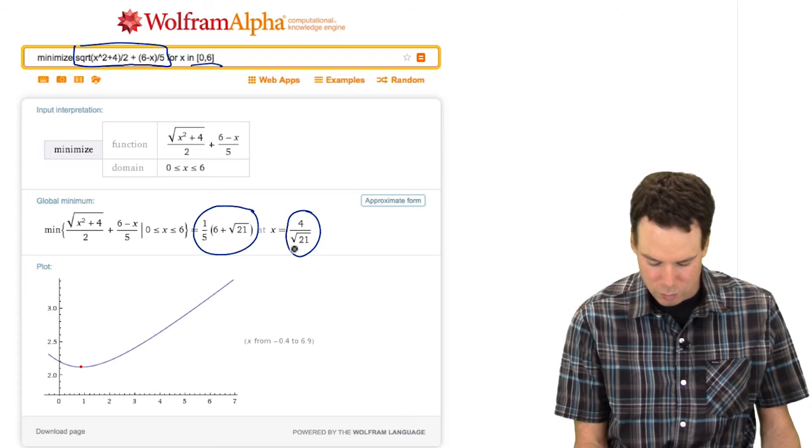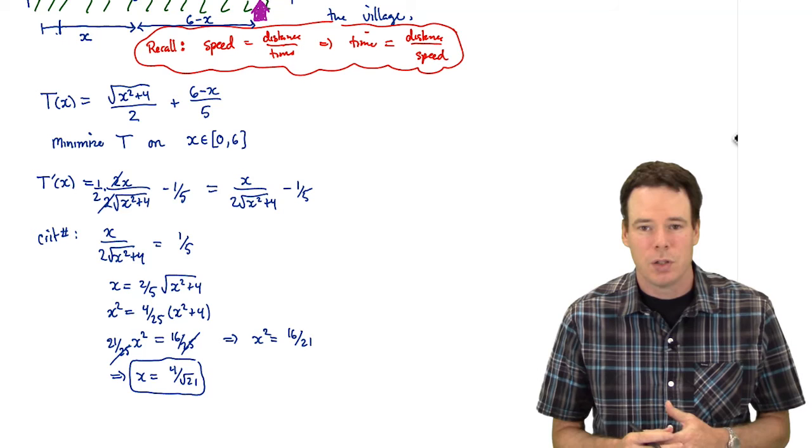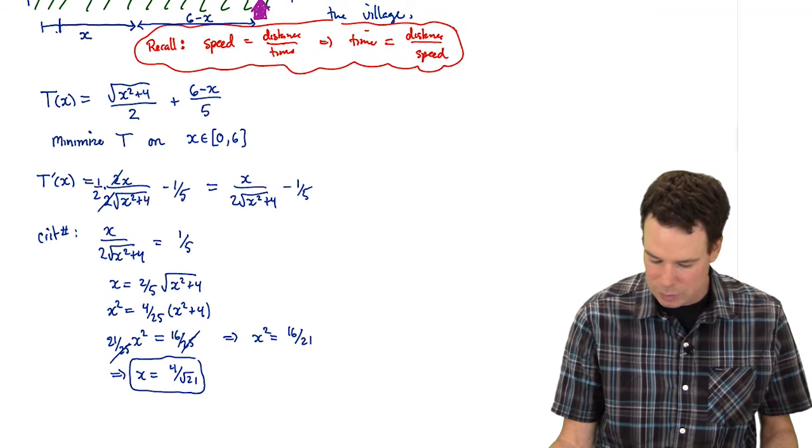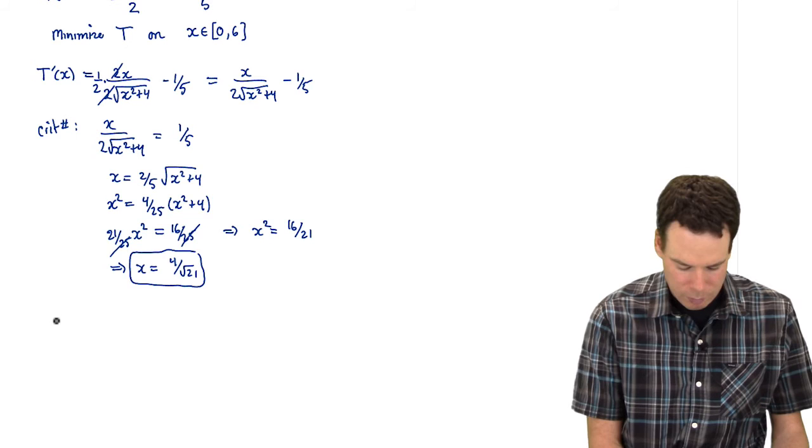If we look back, we can see that we're on the right track because 4 over root 21 was exactly what we got from Wolfram Alpha. So I'm showing you this going back and forth between the tool that gave us the answer already versus our hand computations just so that our goal is to get familiar with these things and be able to do them by hand. But we can certainly, along the process of learning this, double check our answers to make sure we're not making any mistakes. And if we are, then we'll go ahead and learn from our mistakes by investigating where we went wrong. So we got 4 over root 21 is our critical number.